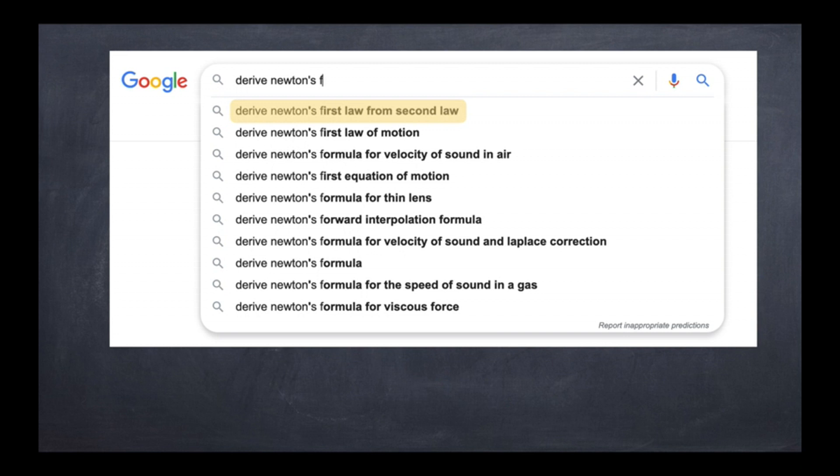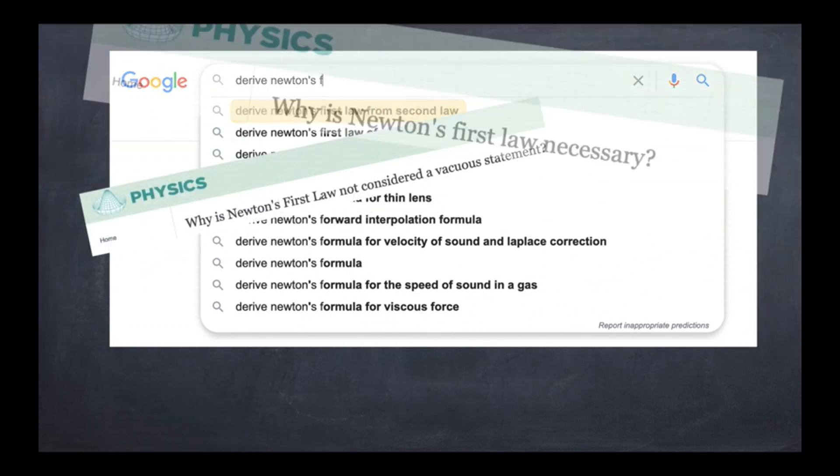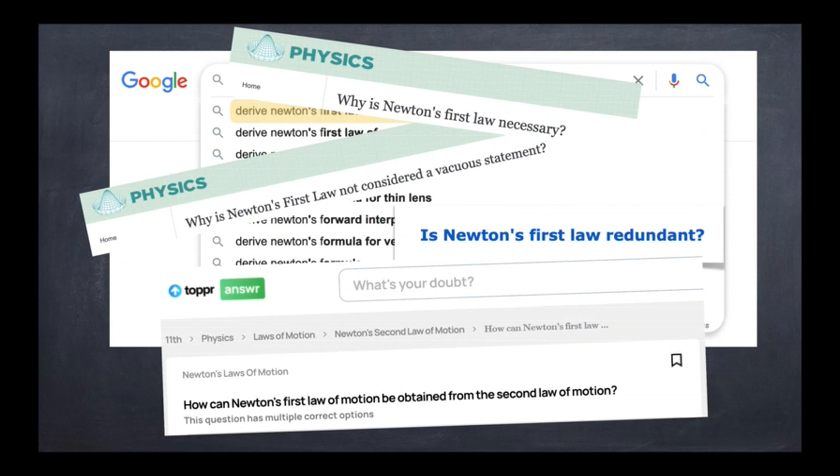To illustrate this fact I've taken a couple of screenshots of the kind of links you get. So what you can see here is that a typical query is whether Newton's first law is necessary or whether it's redundant or vacuous, or how it can be obtained from Newton's second law. And this particular video is precisely to address this question which is so frequent. And to be honest I've also as a student been guilty of thinking that Newton's first law was redundant. I don't believe so anymore and I'm going to explain why.